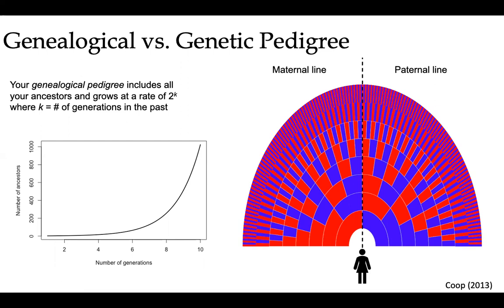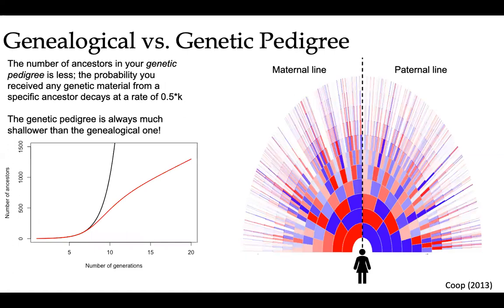Your genealogical pedigree includes all your ancestors, and it grows at a rate of 2 to the K, where K is the number of generations in the past. I've plotted this down here. At 10 generations, you have 1,000 ancestors in your genealogical pedigree. This number grows exponentially, gets really big really quickly.